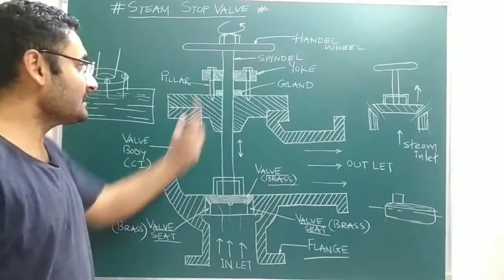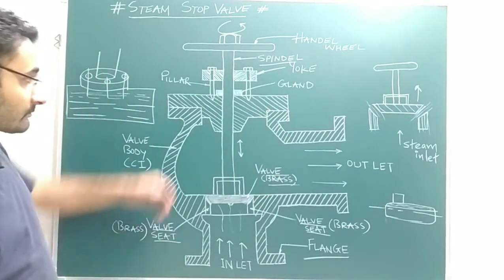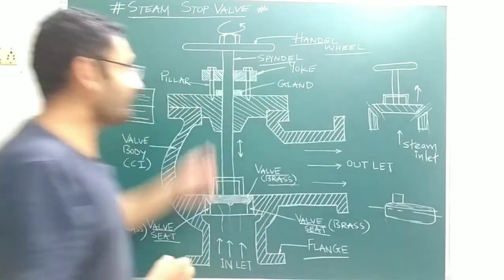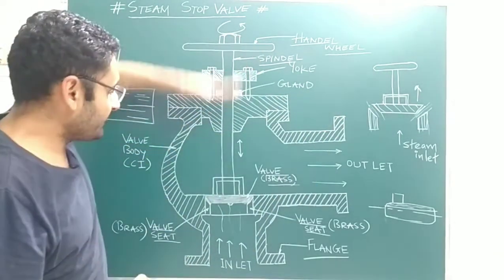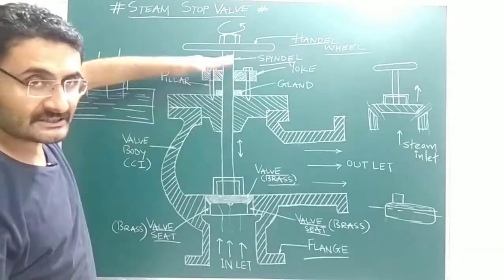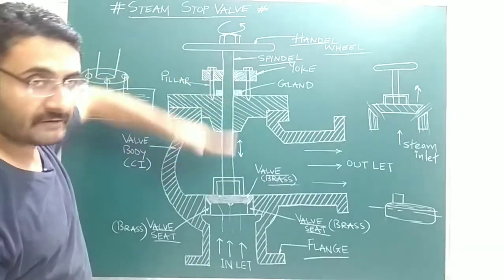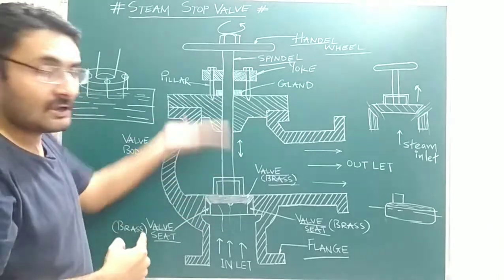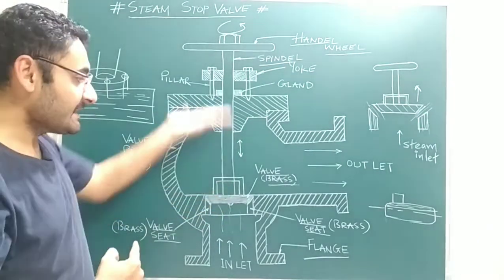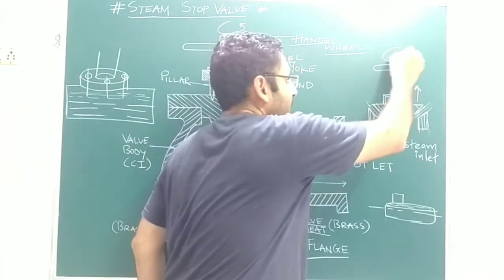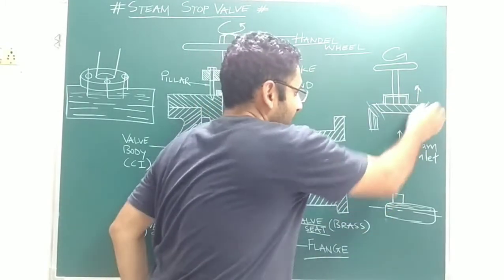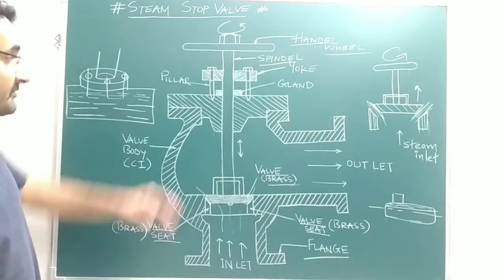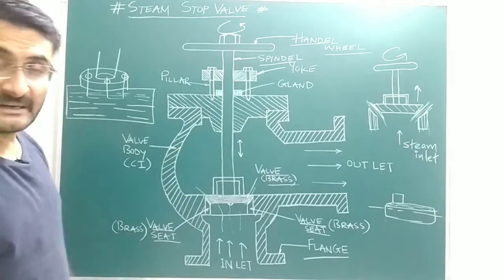The valve is connected to one spindle, and that spindle is connected to a handle wheel. When you rotate the handle, the spindle reciprocates — that is, it moves in the upward and downward direction. So the handle converts rotary motion into reciprocating or oscillatory motion. When the spindle moves upward, a passage is created between the valve seat and the valve.